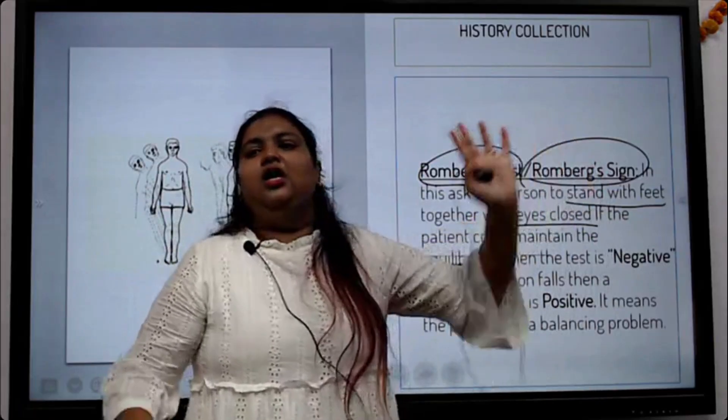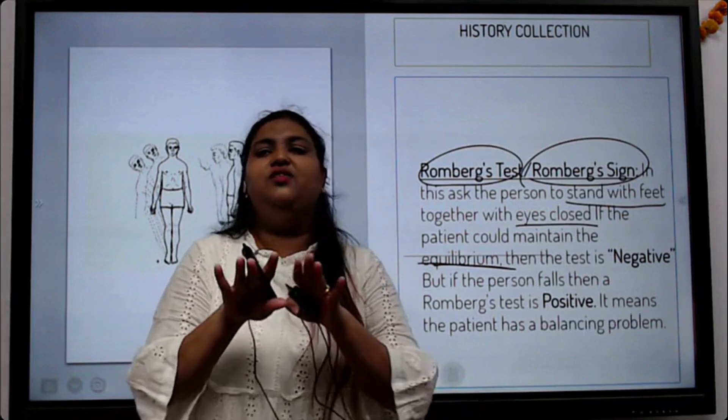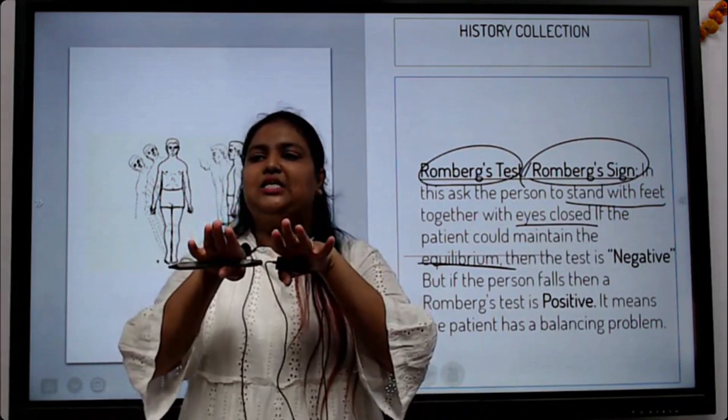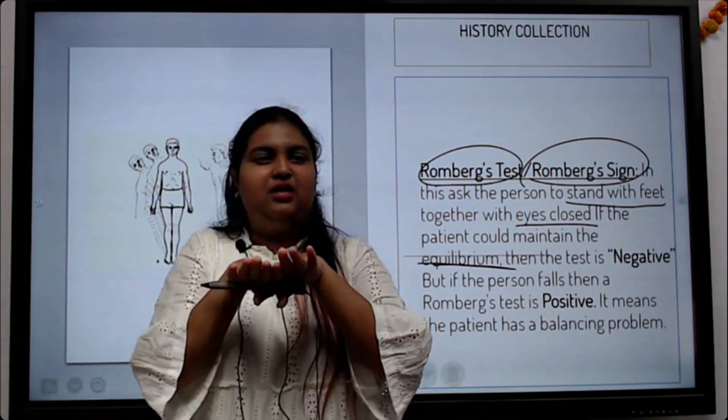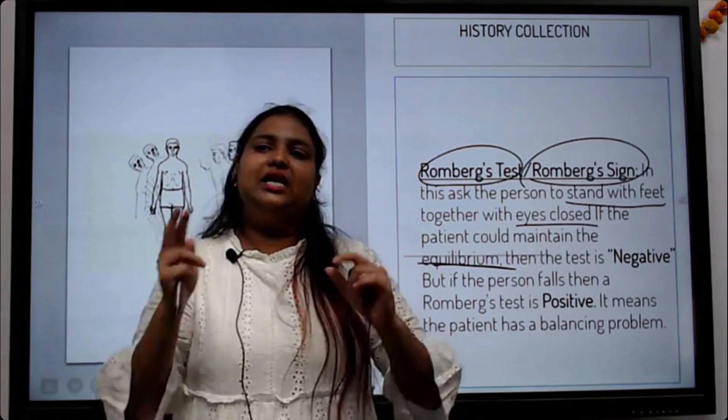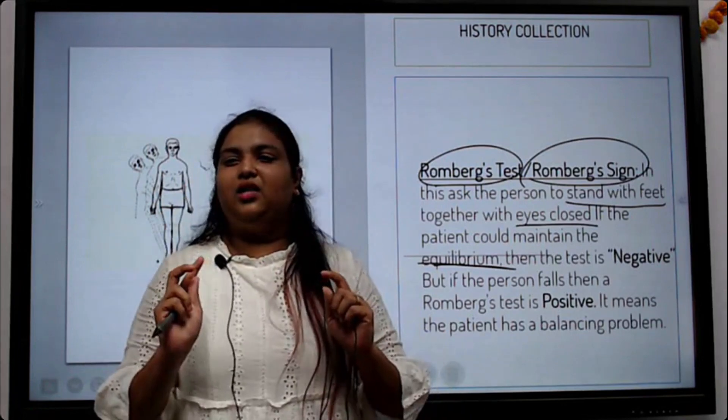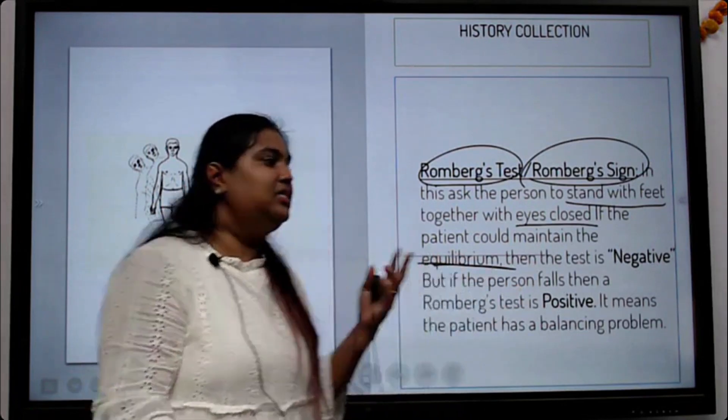To test the Romberg sign, you are going to ask the patient to stand straight like this with the feet together. Imagine this as my feet - you are asking them to stand with the feet together and closed eyes.